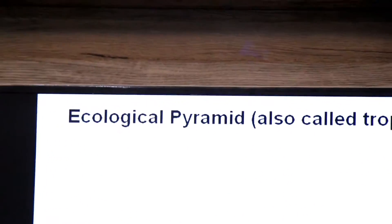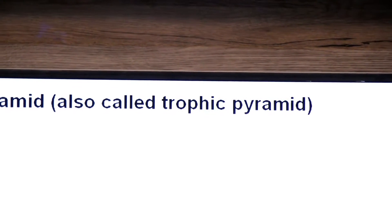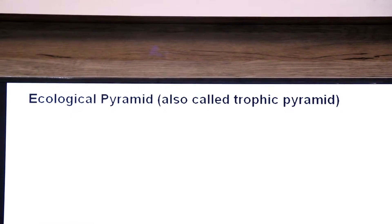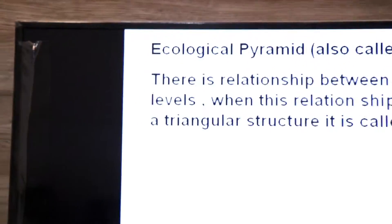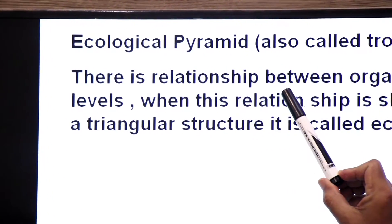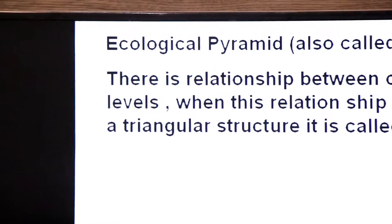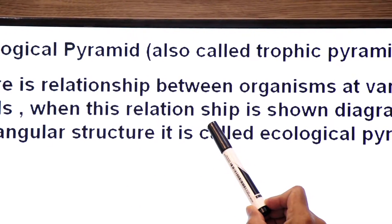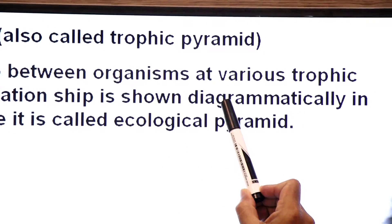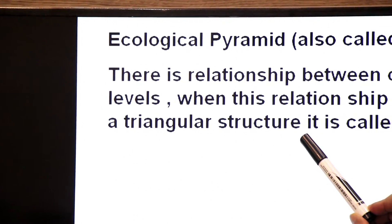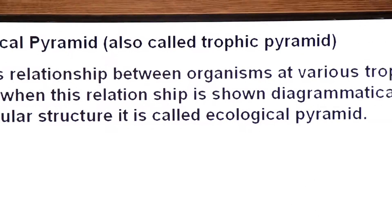Hello dear students, welcome back to our first year biology classes. Today we are going to talk about a short topic — the ecological pyramid, also called the trophic pyramid. There is a relationship between organisms at various trophic levels, and when this relationship is shown diagrammatically in a triangular structure, it is called an ecological pyramid.